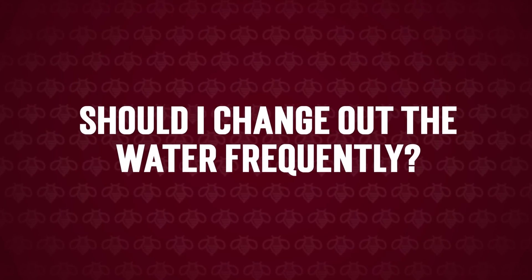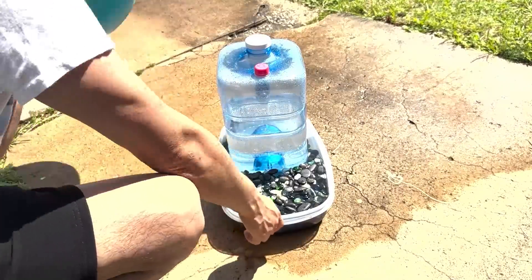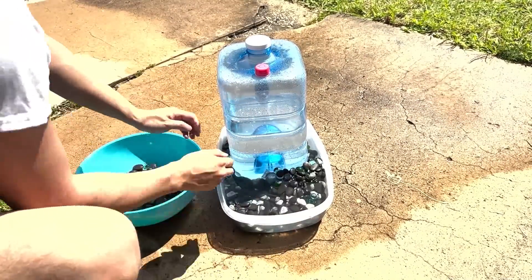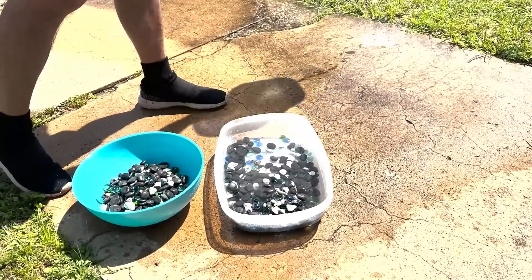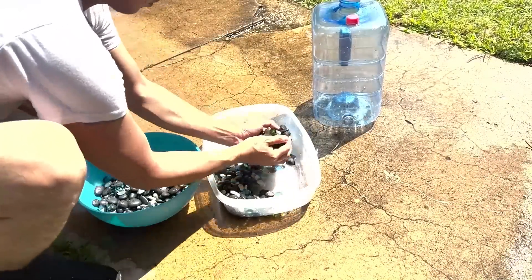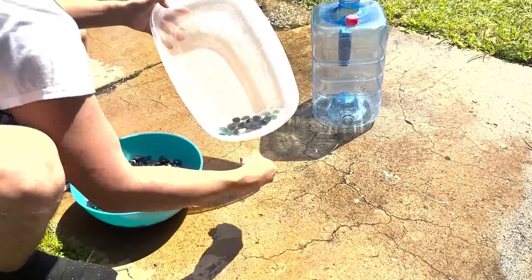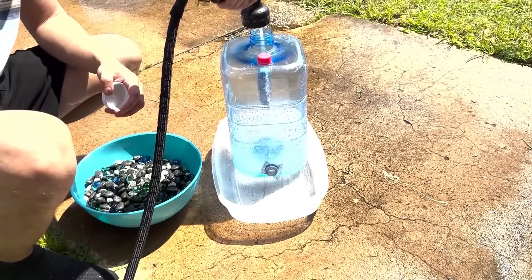Should I change the water out frequently? You should change the water out every one to two weeks to remove any debris or any other potential pests or contaminants. Make sure to top up the water more frequently during hot climates as your bees will be thirsting for more water.